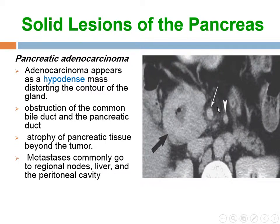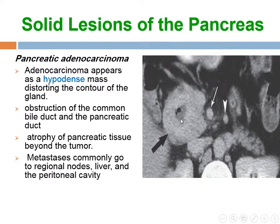Solid lesions of the pancreas: pancreatic adenocarcinoma appears as a hypodense mass, distorting the contour of the gland, associated with obstruction of the bile duct and pancreatic double duct sign, and atrophy of pancreatic tissue beyond the tumor. Metastasis commonly occurs to regional lymph nodes, liver, and peritoneal cavity. Here we have a mass with central necrosis and gas appearing in the center. The superior mesenteric artery and vein appear not involved, so the mass is resectable.